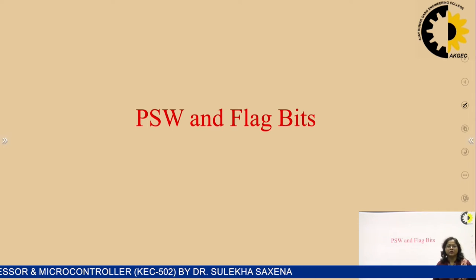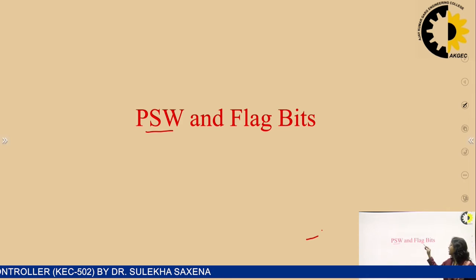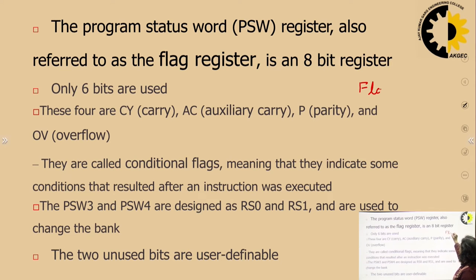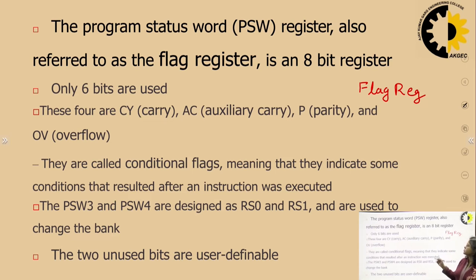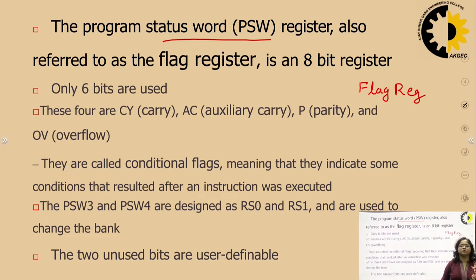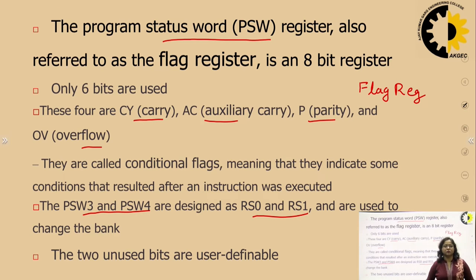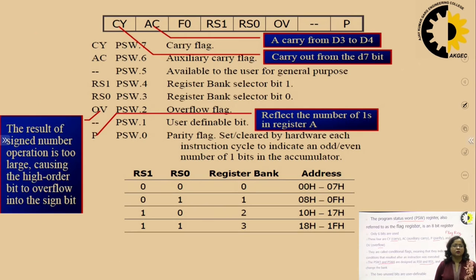Before moving further, we want to know about the Program Status Word (PSW) and flag bits. We have already studied about the flag register in 8085 and 8086 microprocessors. The flag register shows the status of any operation performed by the ALU. The same thing is done by the Program Status Word (PSW) in case of 8051. It is also an 8-bit register which consists of 6 flags; 2 bits are not used. So out of 8, only 6 bits are used to show the status.